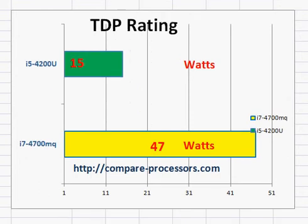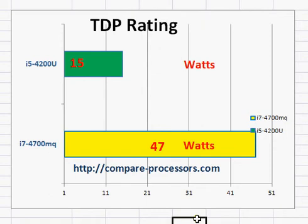One of the most important things to look at is the thermal design power rating, which is 15 watts for the 4200U and 47 watts for the MQ part. The MQ part will need a lot of cooling — a bigger heat sink, a good fan, and so on. That's why you will see this processor used mostly in bigger laptops, typically 17-inch laptops, which are a little thicker to make room for the heat sink and fan.